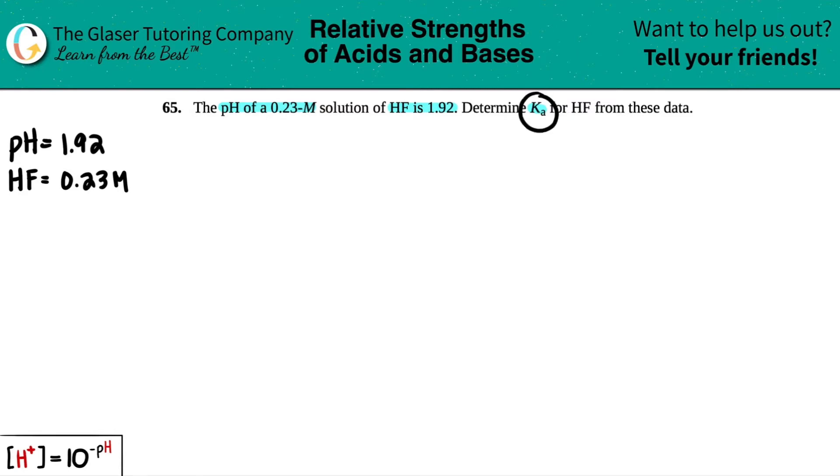Now remember, a Ka, the ionization constant for an acid, always comes from a balanced equation. It comes from the ionization of your acid. In this case, HF is an acid. They're saying that it's an acid because Ka, A for acid. So I'm going to just write a quick equation just to say what HF is doing.